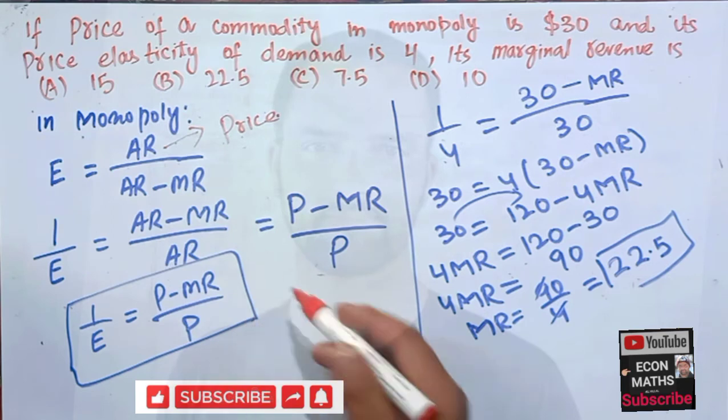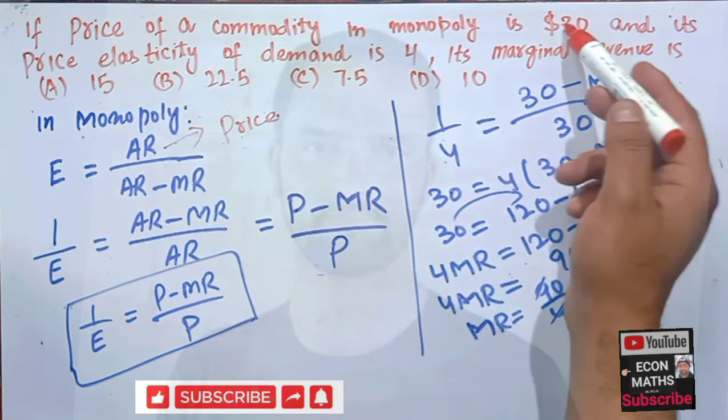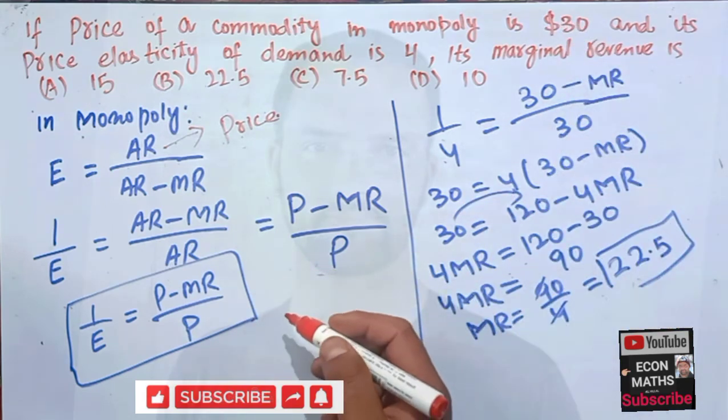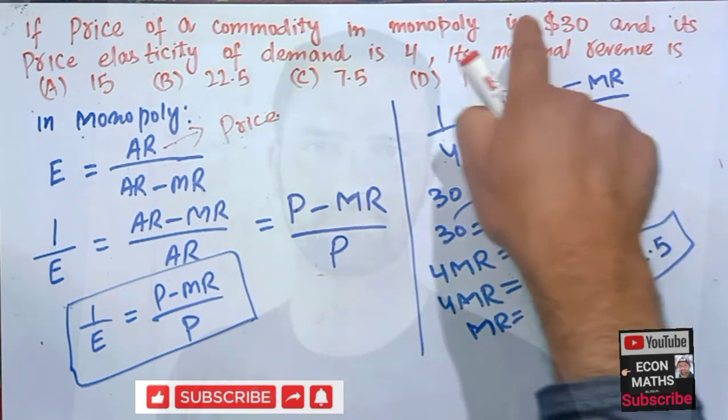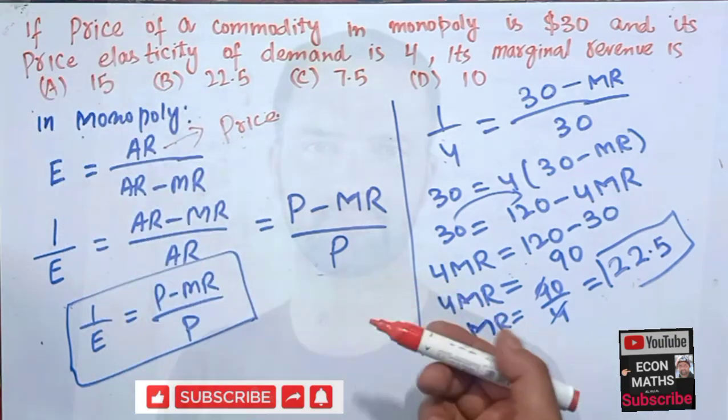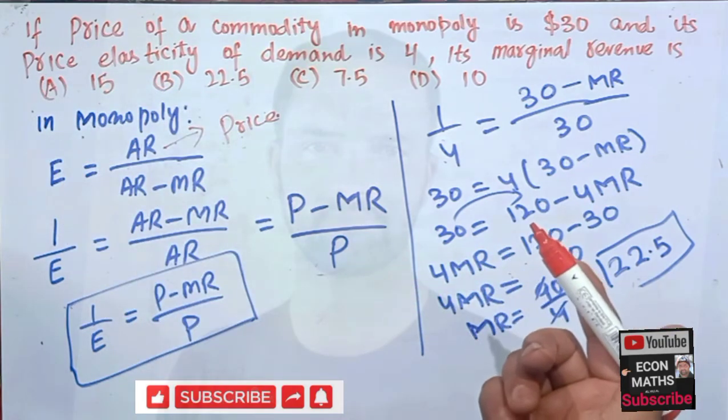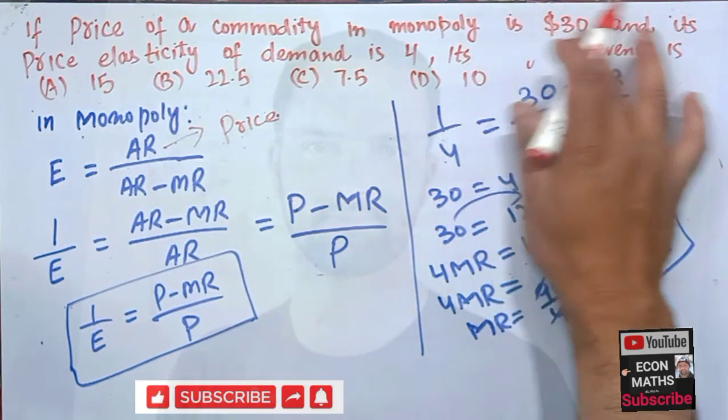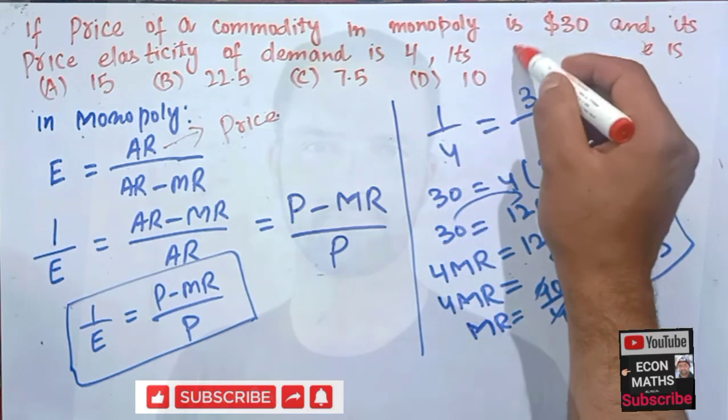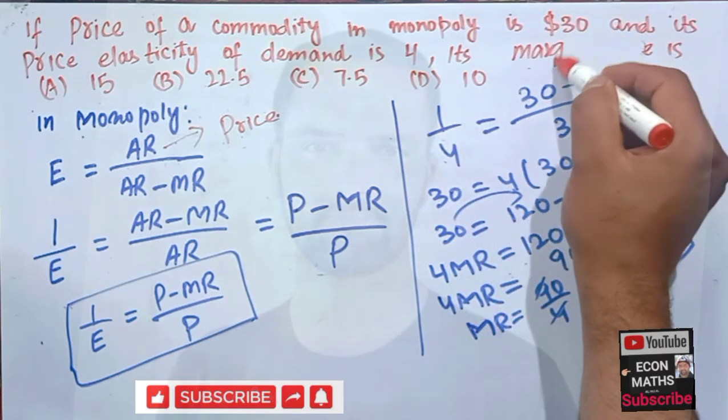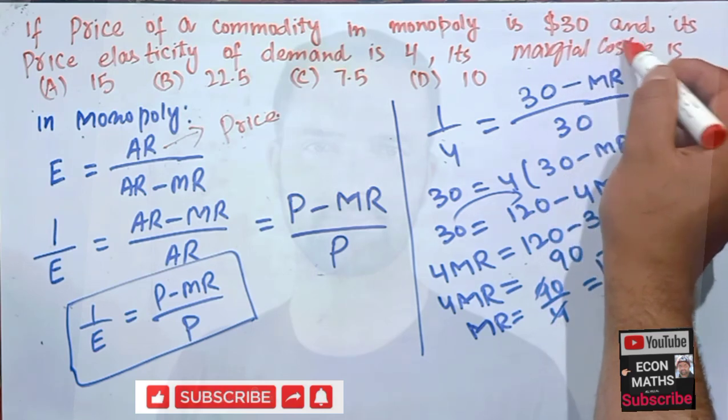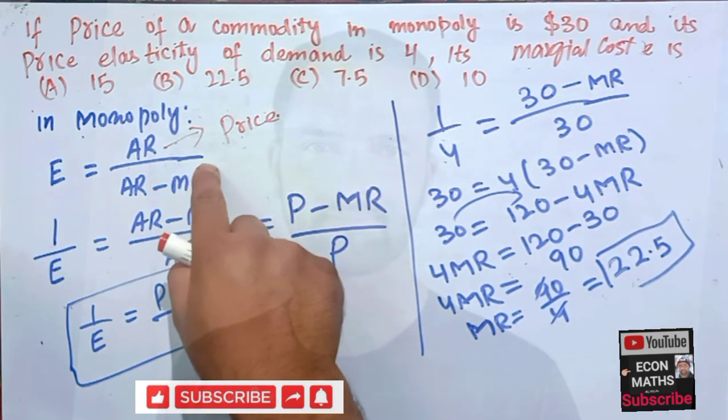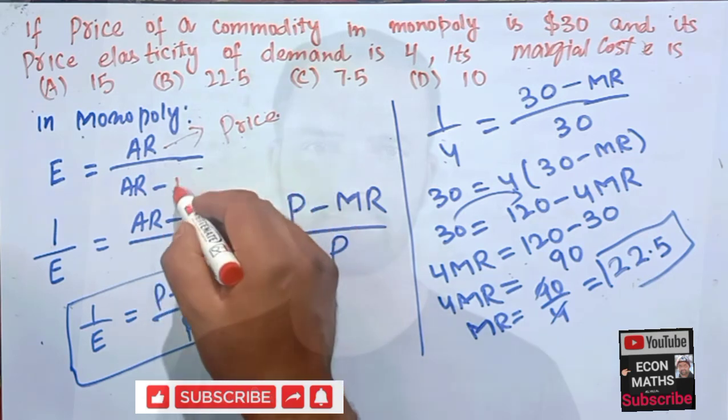Also for the marginal cost this is the same. If we were given here the marginal cost, the question would look the same. In case of here we have, let's say, we have to find the marginal cost in this question. So if I write here marginal cost MC, the question would become here MC.